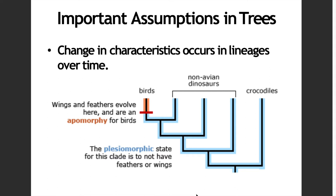Moving on. The important assumption in your phylogenetic trees is that first, there is what we call a change in characteristics that occurs within the lineages over time. We have two characters that we need to remember: we have what we call apomorphic and plesiomorphic characters. Plesiomorphic characters are the original or ancestral conditions — a shared ancestral condition. For apomorphic, that's a changed condition. Apomorphic is the changed condition; plesiomorphic is the ancestral condition.